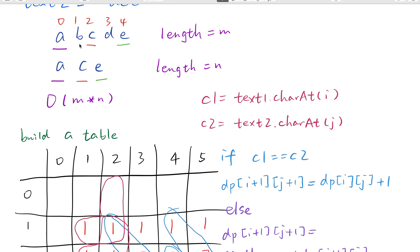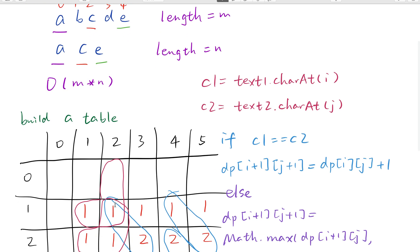So we move i forward. Currently we compare ab and a, ab and ac, ab and ace. So when j is at index 0, ab and a should be 1, right? So the longest subsequence between ab and a should be 1.